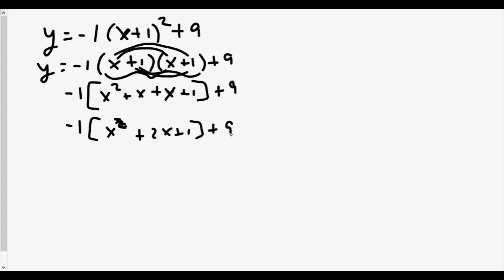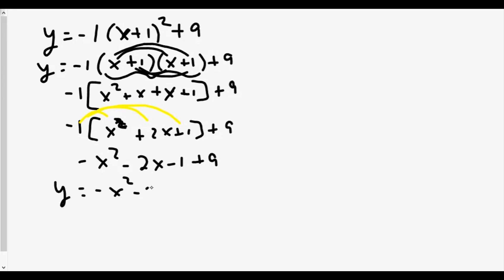Now we distribute the negative one and we get negative X squared minus two X minus one, plus nine. Our equation in standard form is Y equals negative X squared minus two X plus eight.